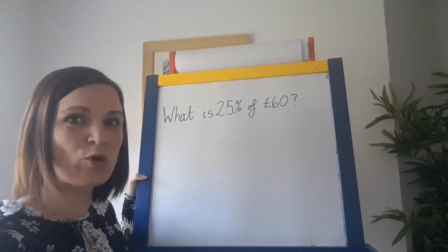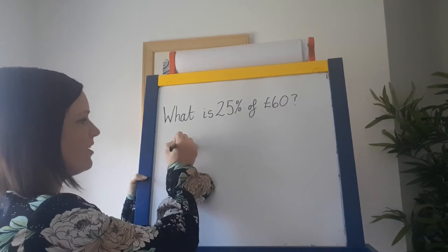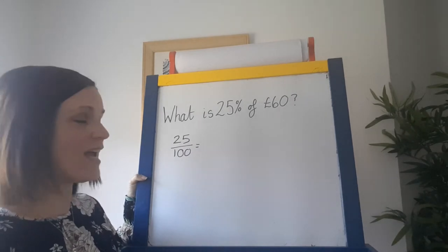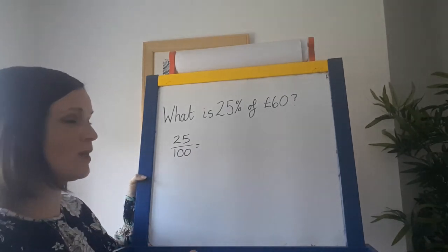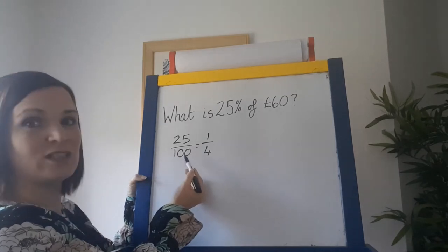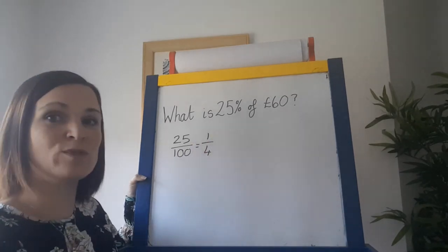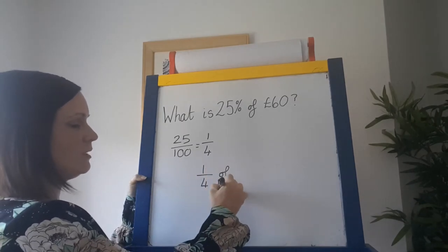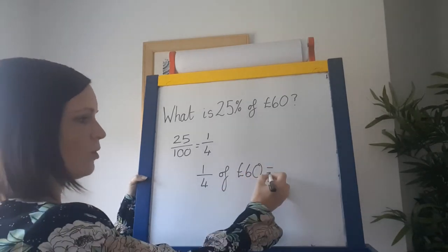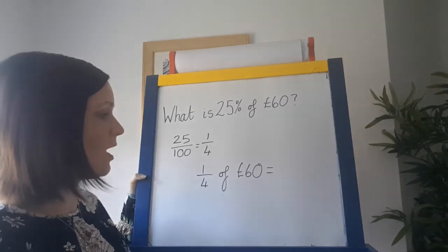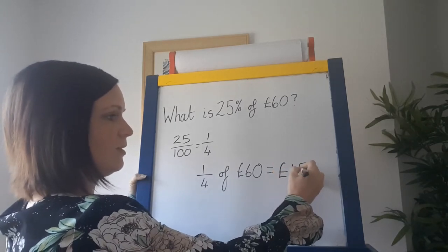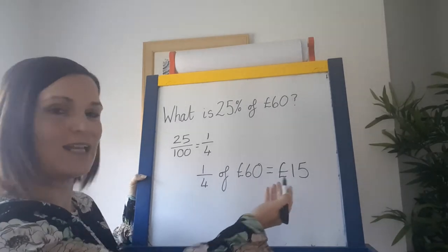Here's another problem. This time we've got 25%. So 25% is 25 over 100. You have to simplify that: 25 divided by 25 is 1, and 100 divided by 25 is 4, so 25% is the same as a quarter. A quarter of £60 — halving and halving again: half of £60 is £30, half of £30 is £15. So 25% of £60 is £15.